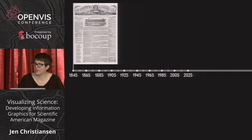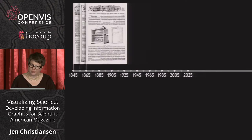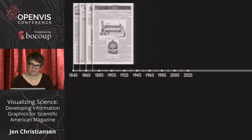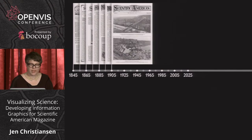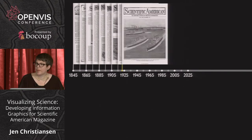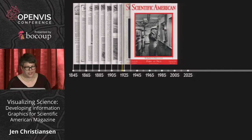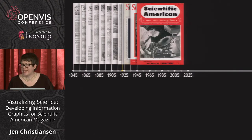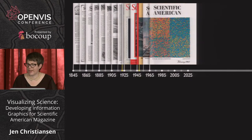Scientific American is the oldest continuously published magazine in the United States. It was founded in 1845 as a four-page weekly devoted primarily to inventions. In 1921, the scope officially broadened — it shifted from a weekly inventor's paper to a monthly periodical of popular science. Several redesigns occurred during the decades that followed, but the next watershed moment occurred in 1948 when the magazine expanded coverage beyond advances in industry and embraced the broader world of applied and theoretical science.